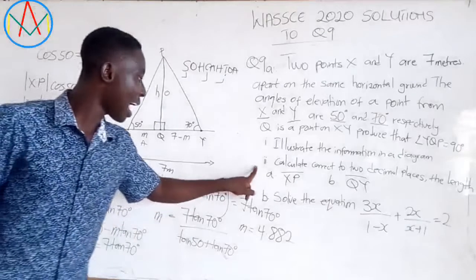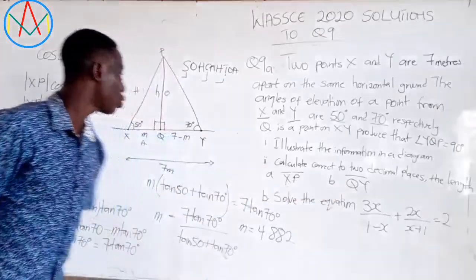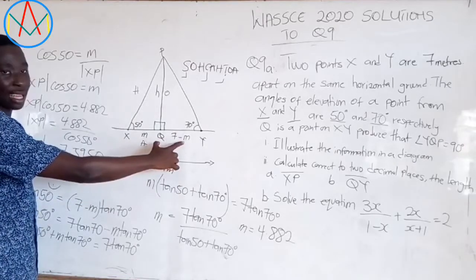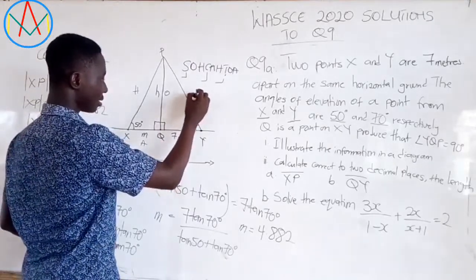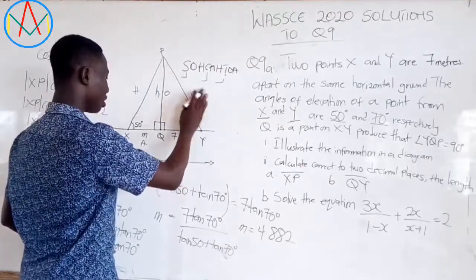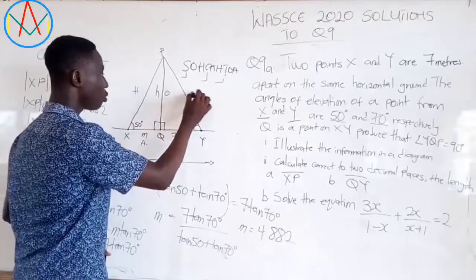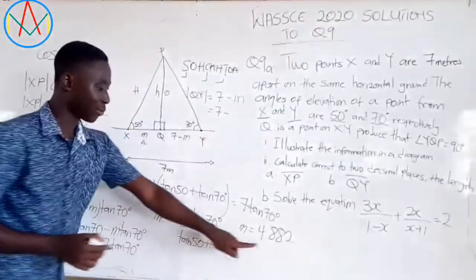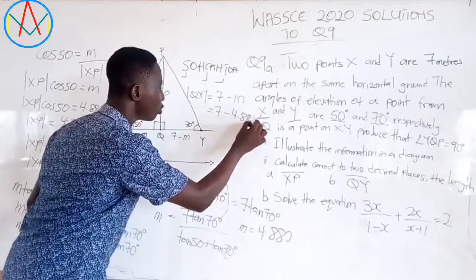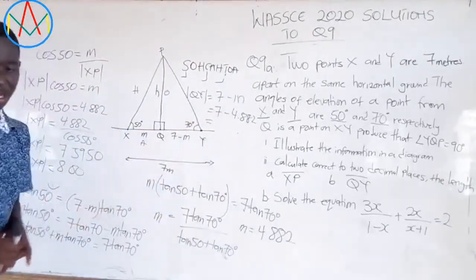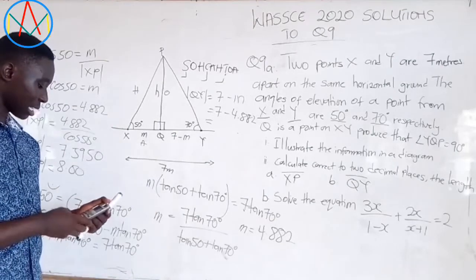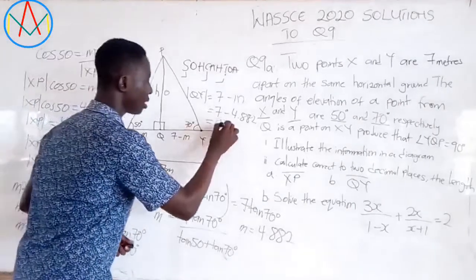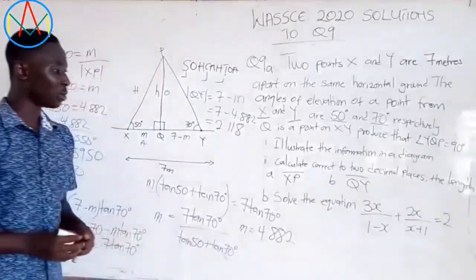Now let's move on to part (b), which is KY. KY equals 7 minus M. So KY = 7 - 4.822 = 2.178. So 2.178 will be the length of KY.